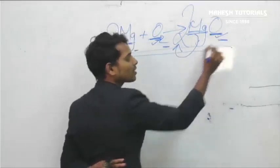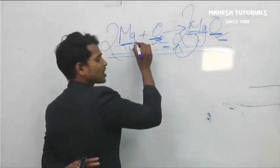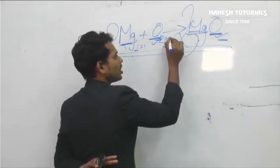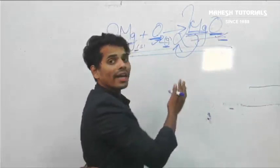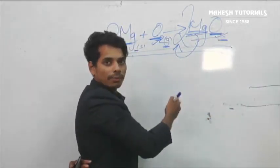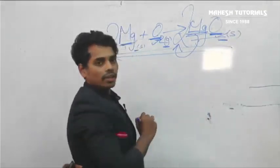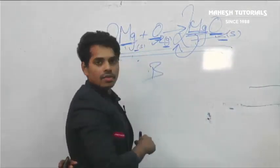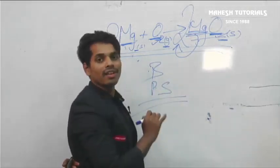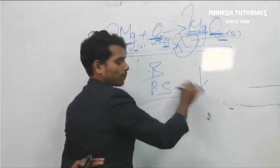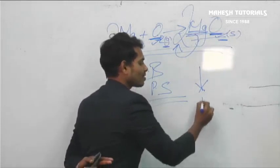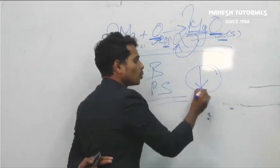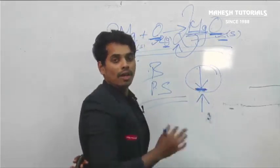Once balanced, we must mention the physical states of reactants and products. Magnesium is a metal — solid state (s). Oxygen is a gas — gaseous state (g). Magnesium oxide is a white powder — solid state (s). The chemical equation is now complete. Also remember: whenever a precipitate is formed, show a downward arrow; if a gas is released, show an upward arrow. Precipitates are formed in double displacement reactions — missing the downward arrow will cost you marks.